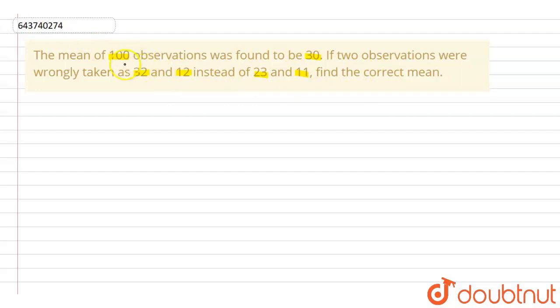So it is given that the mean of 100 observations is equal to 30, and it is also given that two observations out of this 100 were taken wrongly. That is, 23 was taken as 32 and 11 was taken as 12. So we have to find the correct mean.